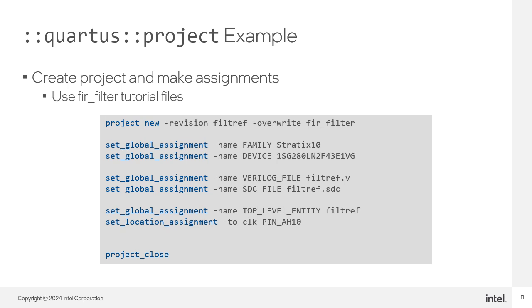Here's an example of a Tickle script that creates an Intel Quartus Prime software project and makes some assignments. This example uses the design files for the FIR filter design included with the Intel Quartus Prime software. First, the project_new command creates a new project named FIRFilter. Use the revision option to specify the revision name. The overwrite switch overwrites any existing project files of the same name. The set_global_assignment statements follow the syntax: set_global_assignment -name assignment_name value. We assign the family, device, source files, top-level entity, and SDC file using global assignment commands.